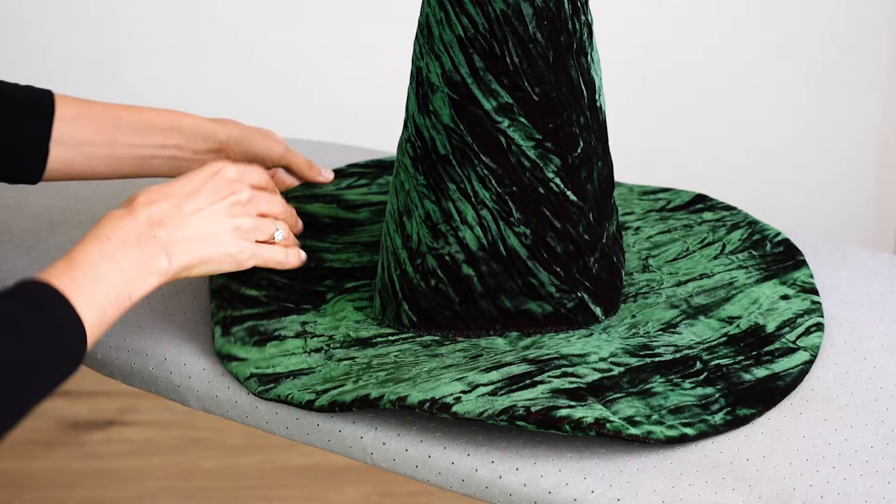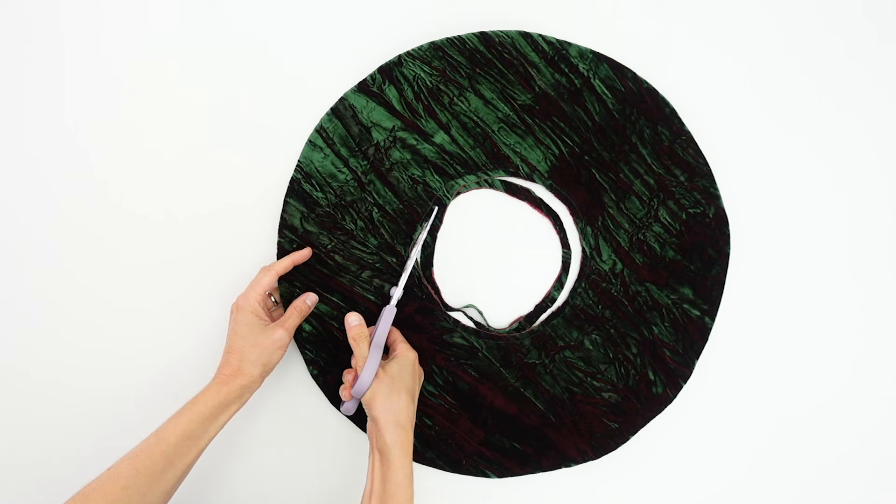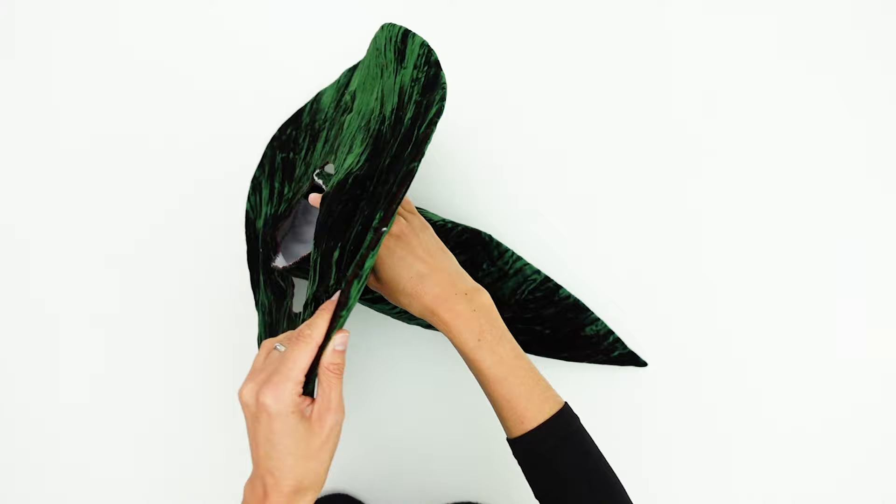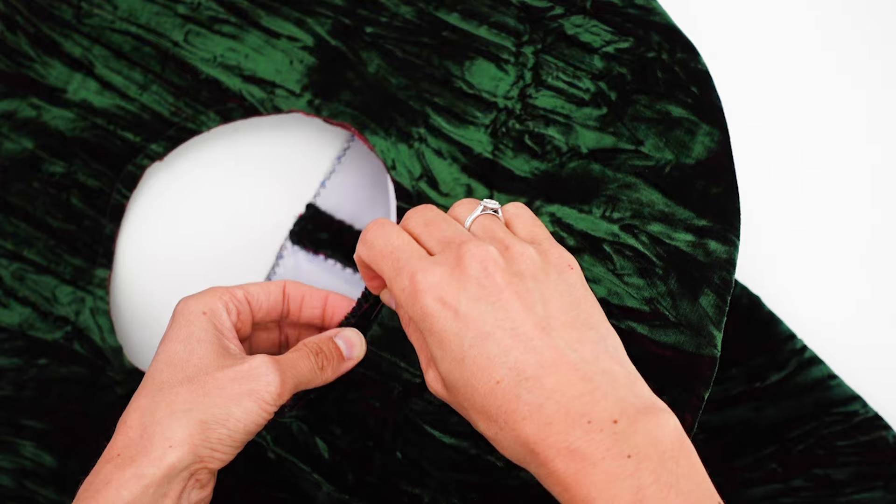So, first we need to cut a bit more of the fabric inside the brim. You can cut at about 7mm from the seam and when it's done, we need to insert the top part of the hat into the brim's opening and pin both pieces right sides together.